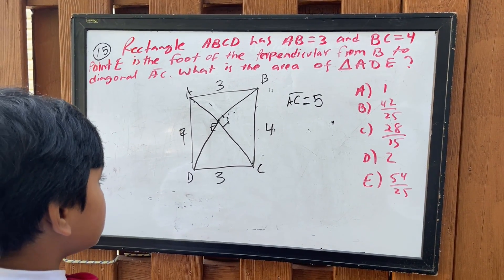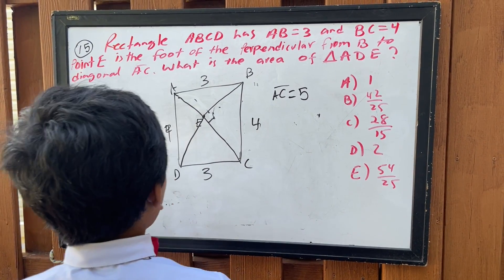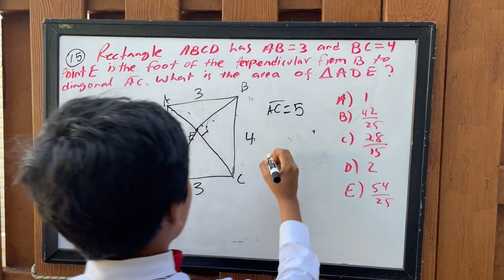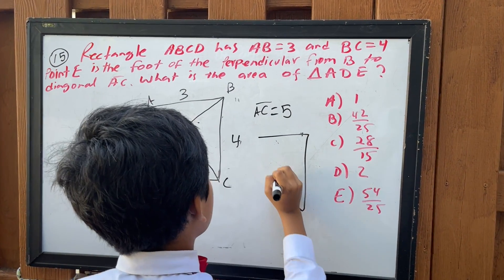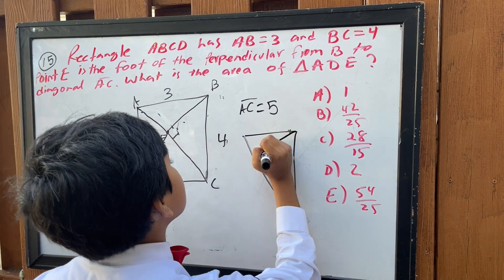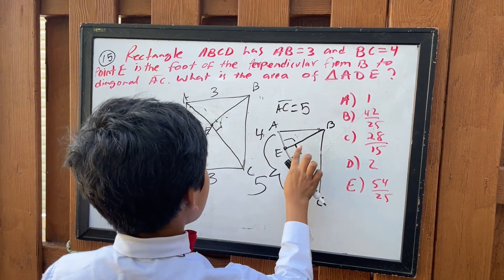Now, how do we do this? Well, think about it. Since we have AC over here, let's say we have this triangle ABC. Now think about it. BE is actually the altitude of this triangle. Think about it. These two triangles are similar.